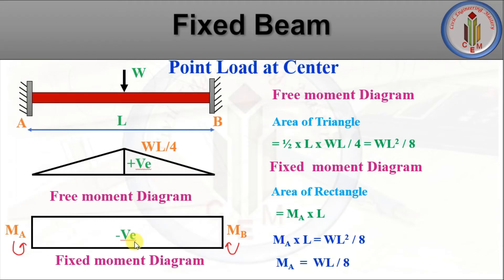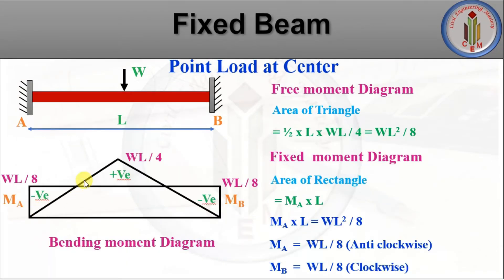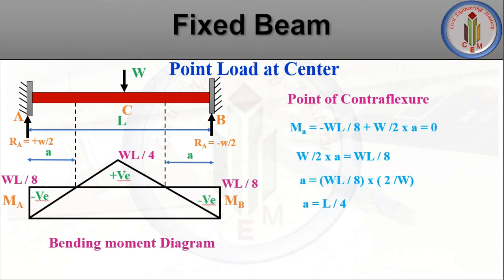Now we combine the two bending moment diagrams — the free moment diagram and the fixed moment diagram. From this, MA = WL/8 (anti-clockwise) and MB = WL/8 (clockwise).